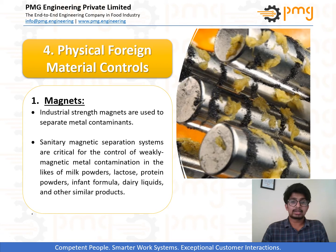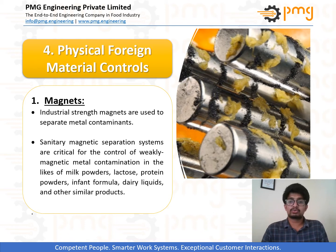Magnet traps are used to separate ferrous contaminants in food and they are essential in dry food industries — powders, mixtures, formula food industries, etc.